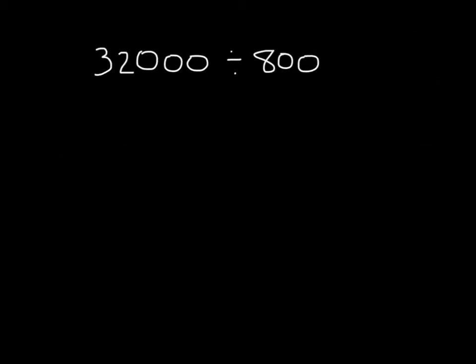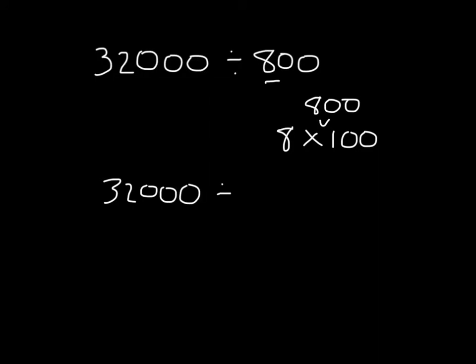Here I have another problem: 32,000 divided by 800. This is different from all the other problems because 800 is not a power of 10. However, can we think of 800 as a factor with a factor of a power of 10? This is actually 8 times 100. So really, what we're doing is dividing 32,000 by 100 and also dividing it by 8.